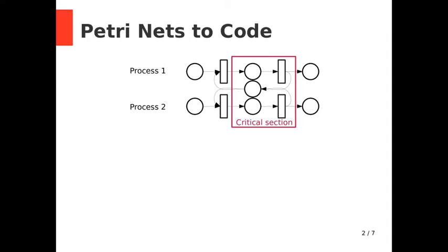Places can hold an arbitrary number of tokens. A transition can fire when all of its input places have at least one token available. When it fires, it consumes one token from each of its input places and creates one token for each of its output places.